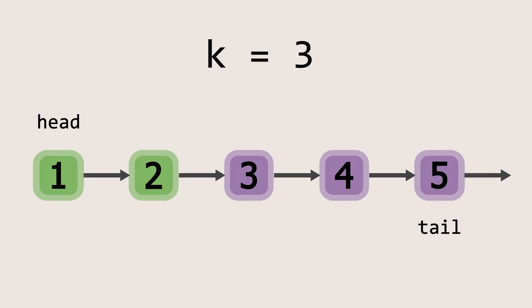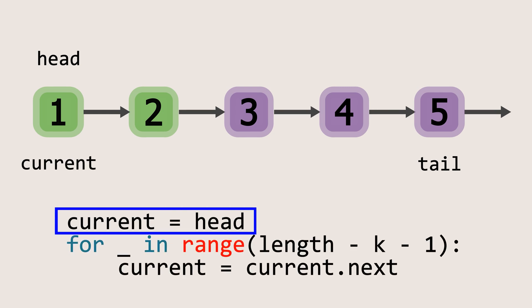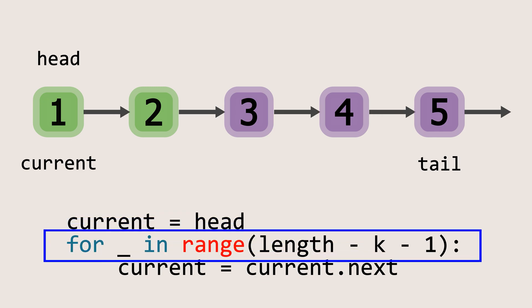In this case, the 4th element from the end. And to do this, we first create a variable called current, initially set to the head of the list. And then we run a loop that iterates length minus k minus 1 times.